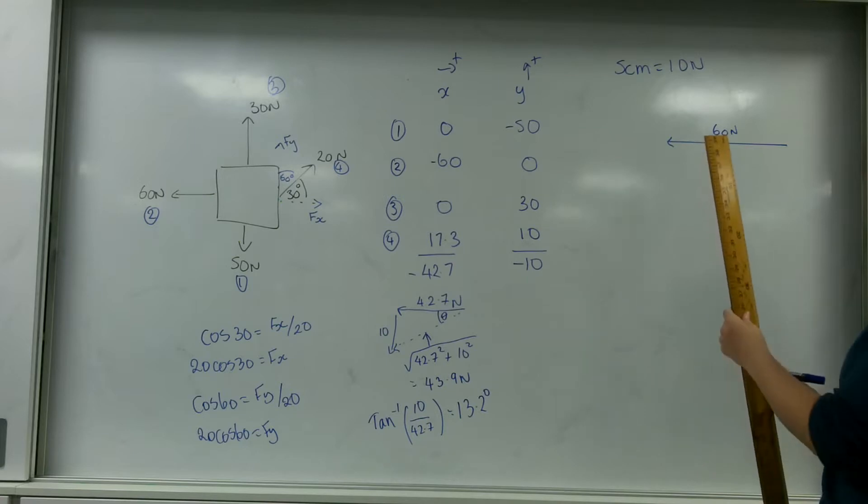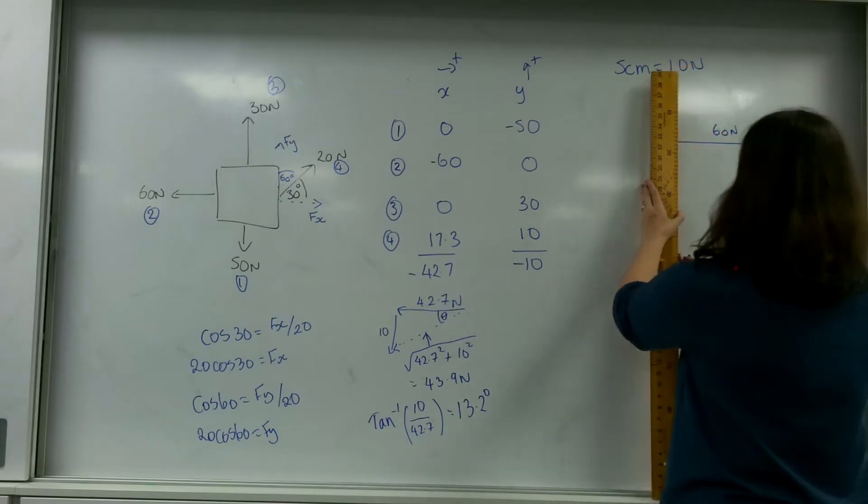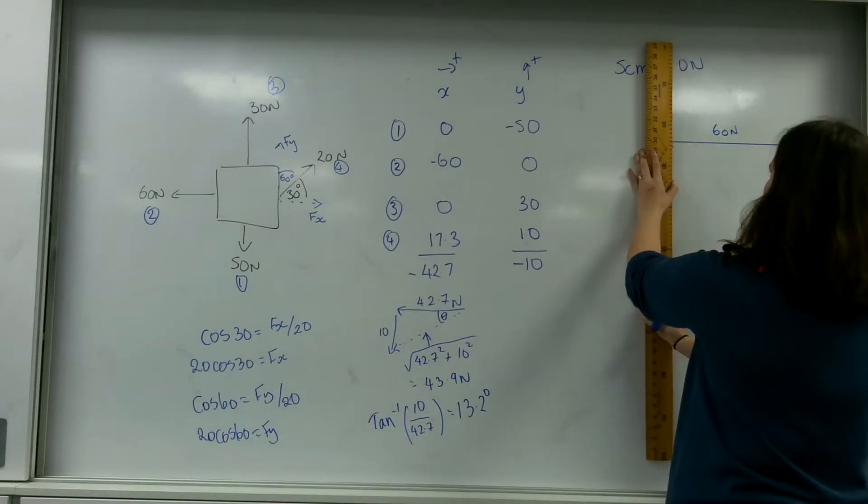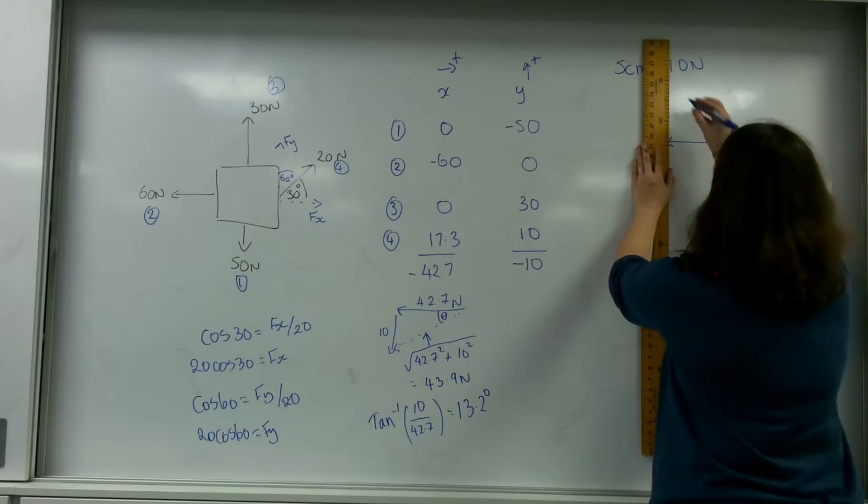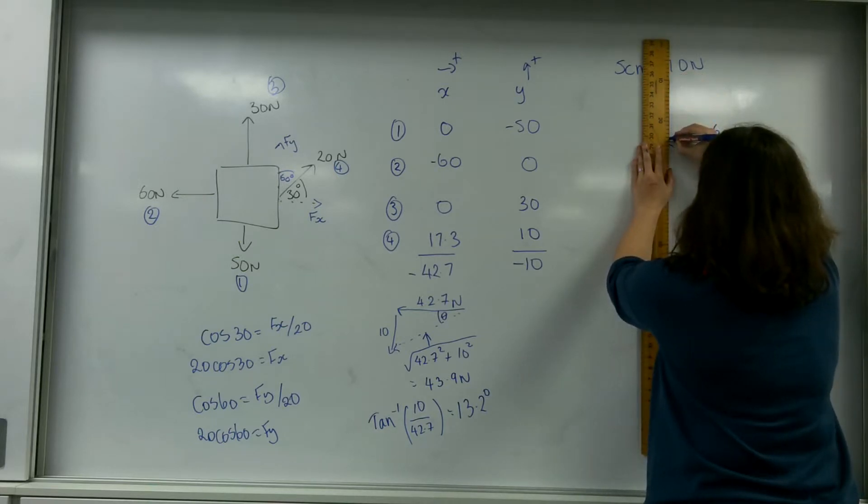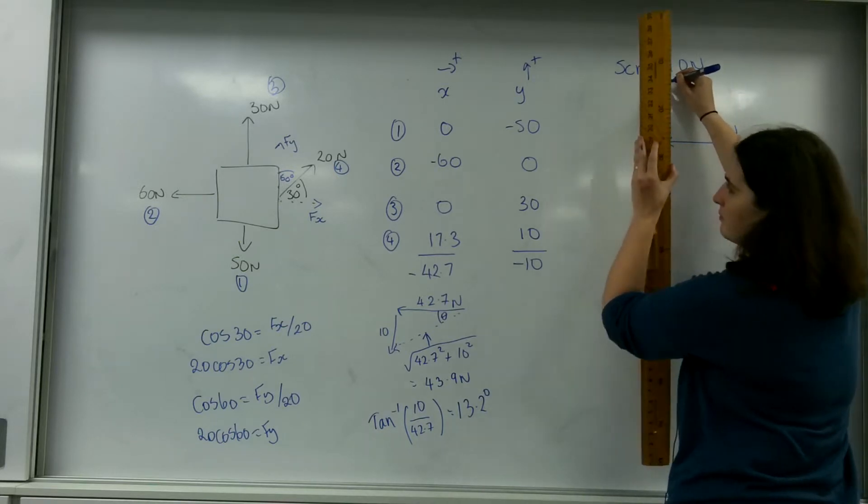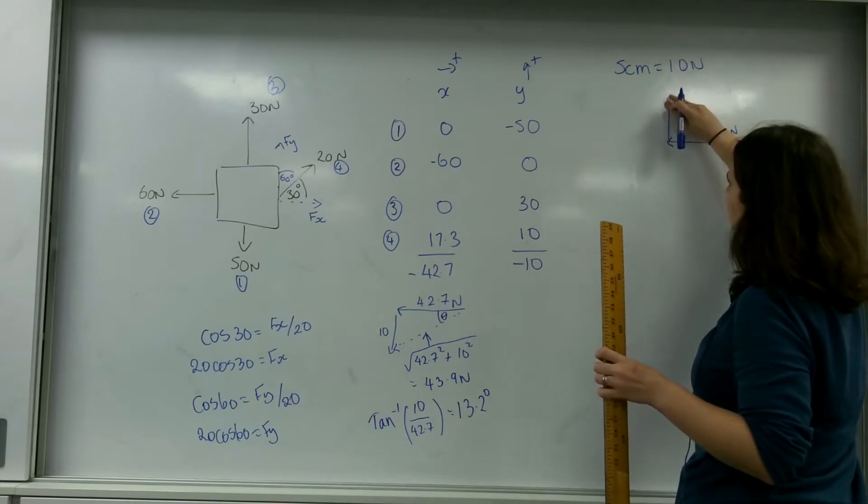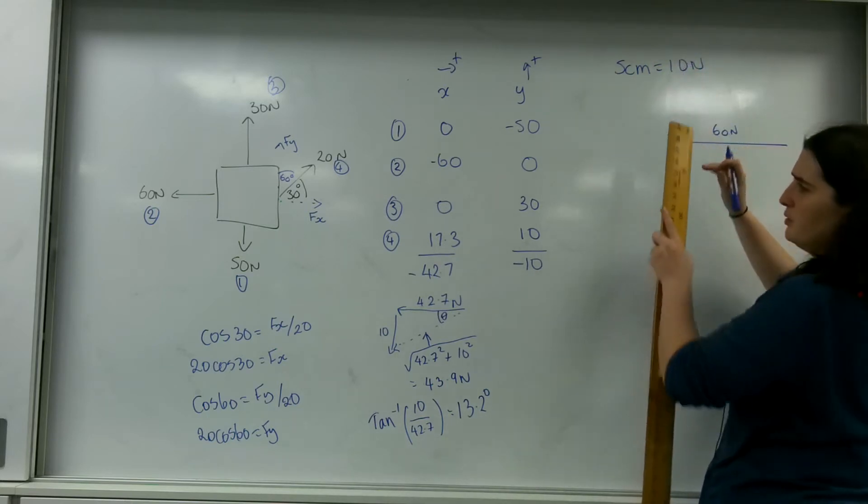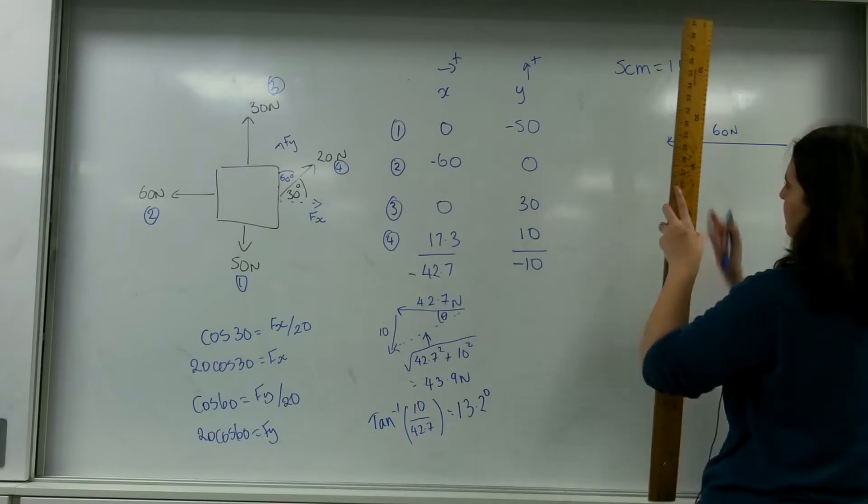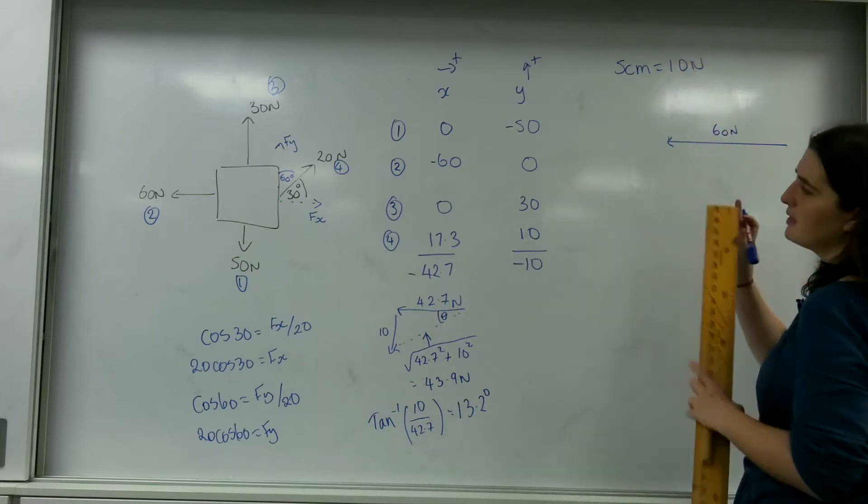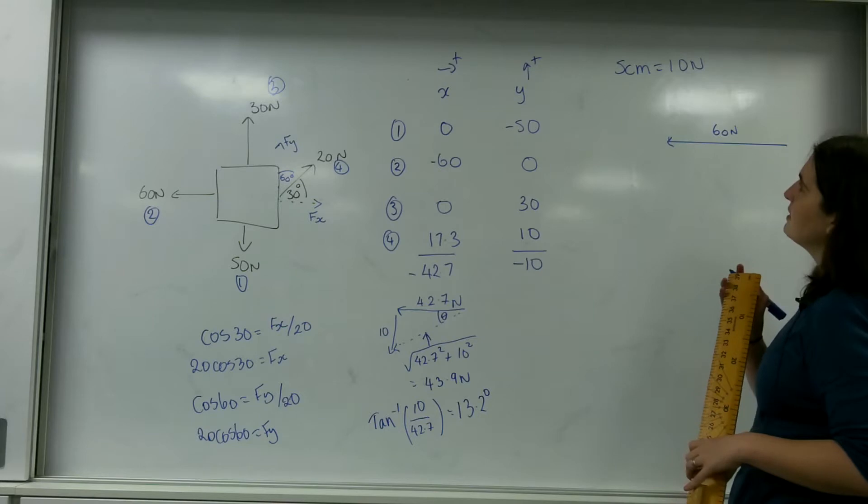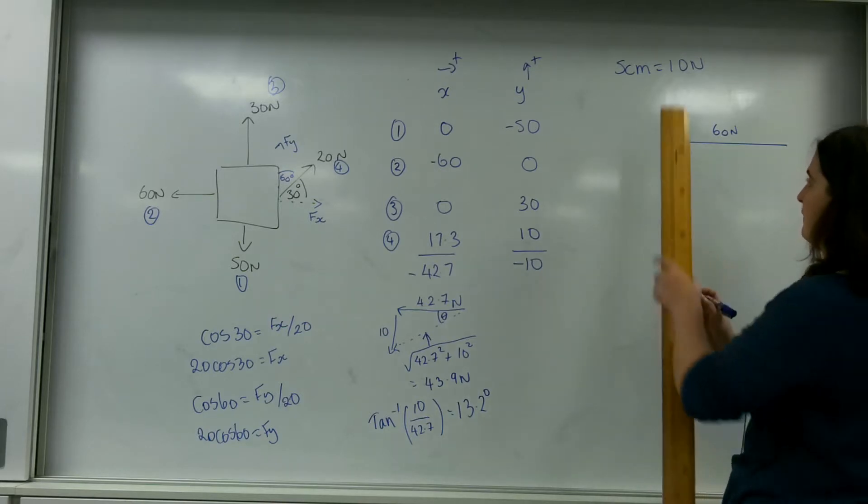I'm then going to do 15 centimeters up. That's 25 so here. Now I'm going to do the 50 one first. So I'm going to go 50 down. I'm running out of a bit of space. So 5 centimeters is 10 newtons, so 25 down.